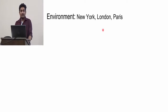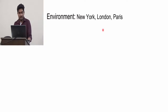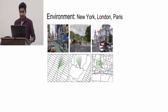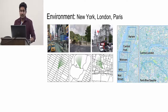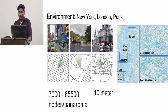For environments, they selected New York, London, and Paris. According to the main author, Peter Mirowski, he selected those because he knew those environments really well. You can see Times Square, Central Park of New York, and St. Paul's Cathedral in London. In each city, they took almost 7,000 to 65,000 panoramas. The distance between two consecutive panoramas is 10 meters, and it covers almost 3.5 to 5 kilometers in each area.